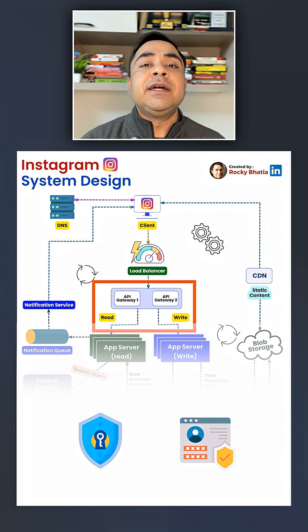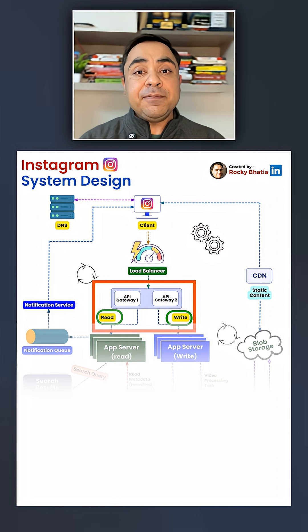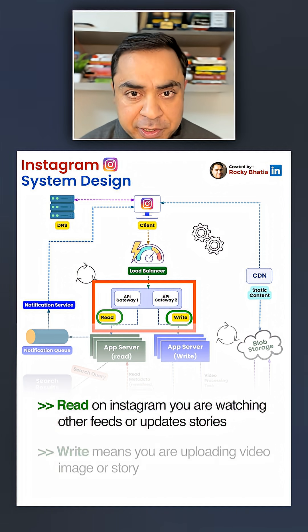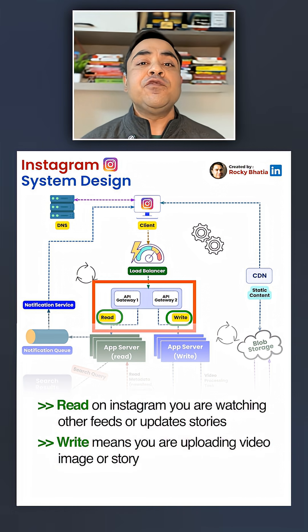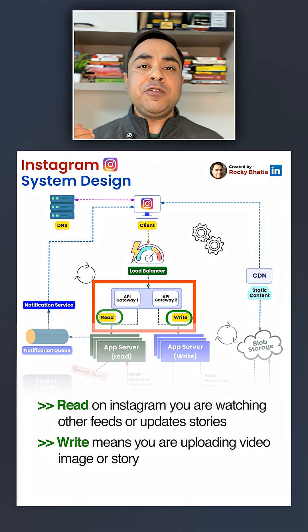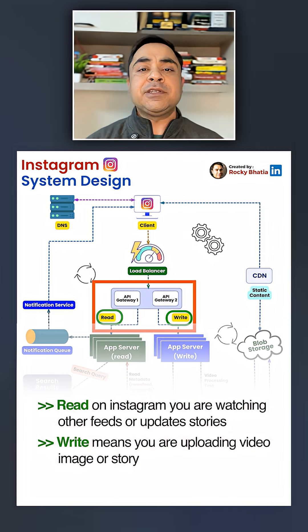The API gateway also divides the data into read and write. Read means when you have to see what your friends are doing, and write means when you want to upload your image, post some messages, or post your stories.